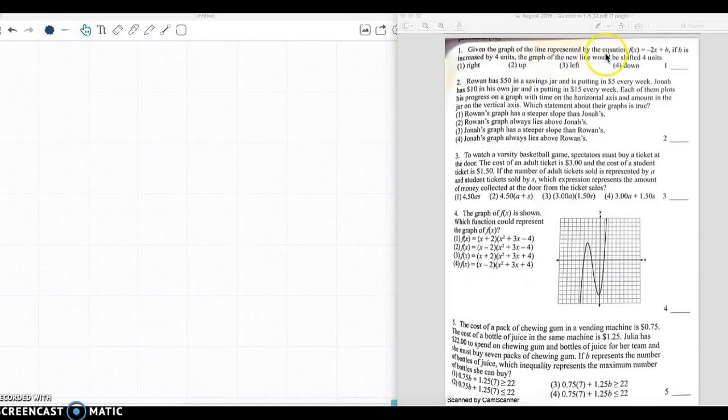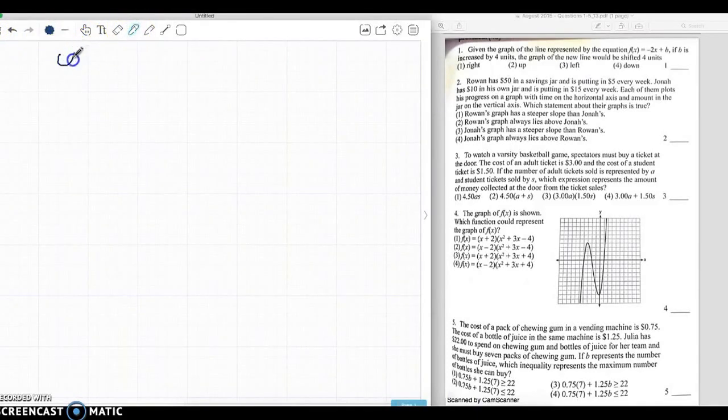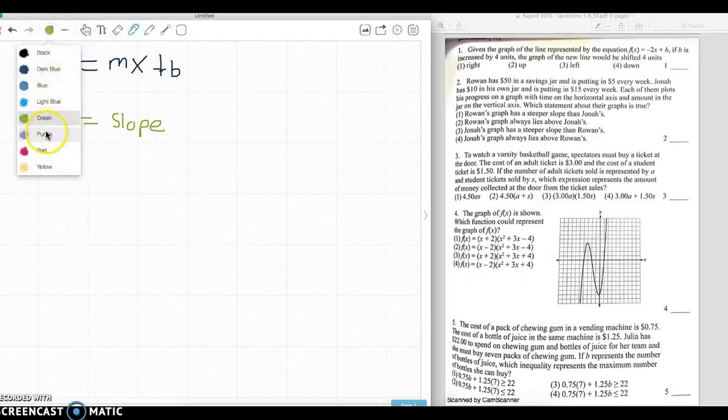Given the graph of the line represented by the equation f(x) equals negative 2x plus b, if b is increased by four units, the graph of the new line will be shifted four units to the right, up, to the left, or down. We know that the standard form is y equals mx plus b. And we also know that m equals the slope, and that b equals the y-intercept.